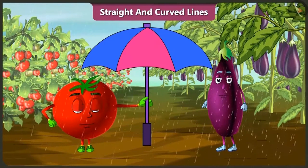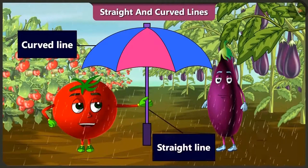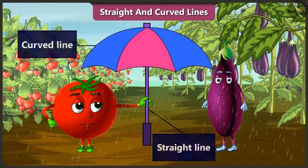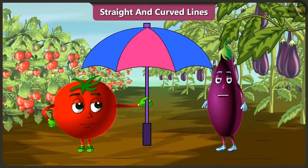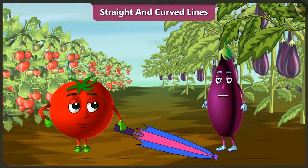The umbrella is made using both curved and straight lines. Tingu says: I think the rain has stopped. Yes, but we will keep the umbrella with us — we don't know when we would need it. You are right.